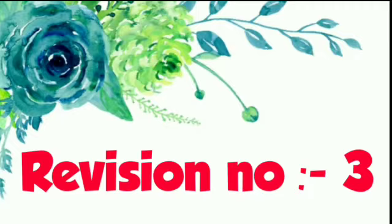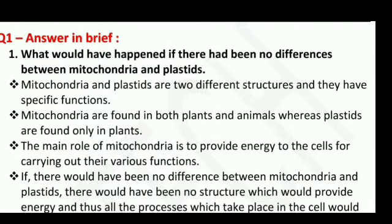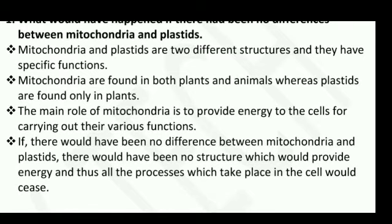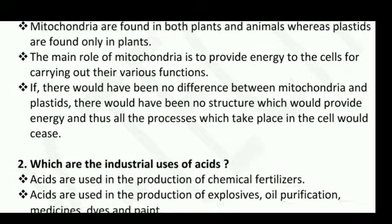Mitochondria and plastids are two different structures with specific functions. Mitochondria are found in both plants and animals, whereas plastids are found only in plants. The main role of mitochondria is to provide energy to the cells for carrying out their various functions. So if there had been no difference between mitochondria and plastids, there would have been no structure to provide energy, and thus all the processes in the cell would cease.